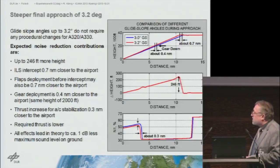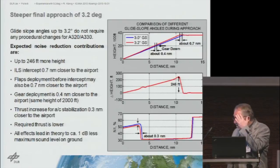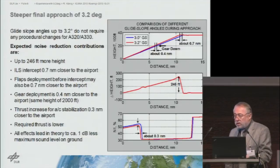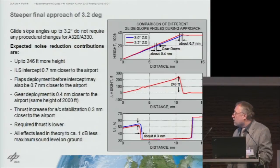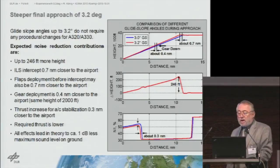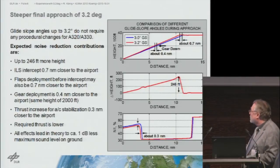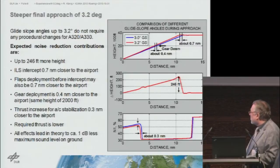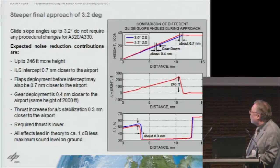Why 3.2 degrees and not more? Our research has shown that 3.2 degrees is the limit up to which you can fly the aircraft without changing the deployment of flaps, gear, et cetera. But this only holds true for the A320 and the A330 — the types of aircraft we used for testing and validation. 3.2 degrees leads to a higher altitude — 246 feet — before starting the continuous descent, but it also leads to a later stage of configuration because you fly laterally for a longer period of time.